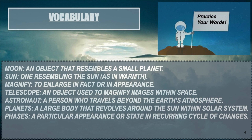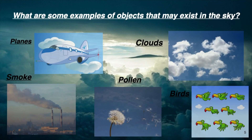You see our astronaut in the corner up there? He's asking you to practice your words with somebody at home, or by yourself — write them on note cards so you're familiar with these vocabulary words for this week's lesson. Now let's take a look at some examples of objects that we probably see in the sky on a daily basis when we're walking home from school or looking out our window. We see planes, clouds, smoke, pollen from flowers, and even birds throughout the day.